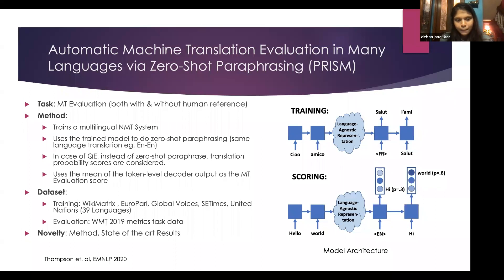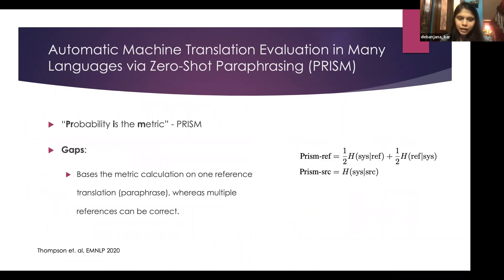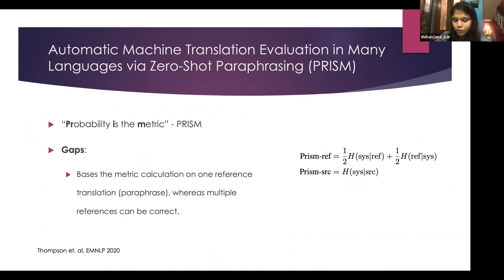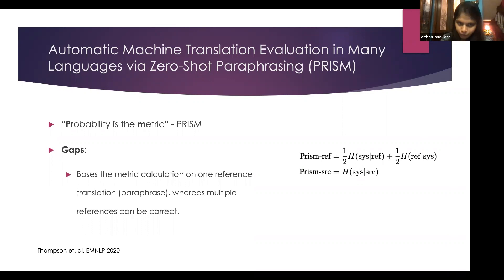In PRISM, whatever probability scores they get, they take an average and call that the MT evaluation metric. Their data included Europarl, WikiMatrix, and Global Voices, evaluated on WMT 2019 metrics across 39 languages. One main gap is that for reference-based evaluation they only looked at one reference translation, whereas multiple correct references could exist.